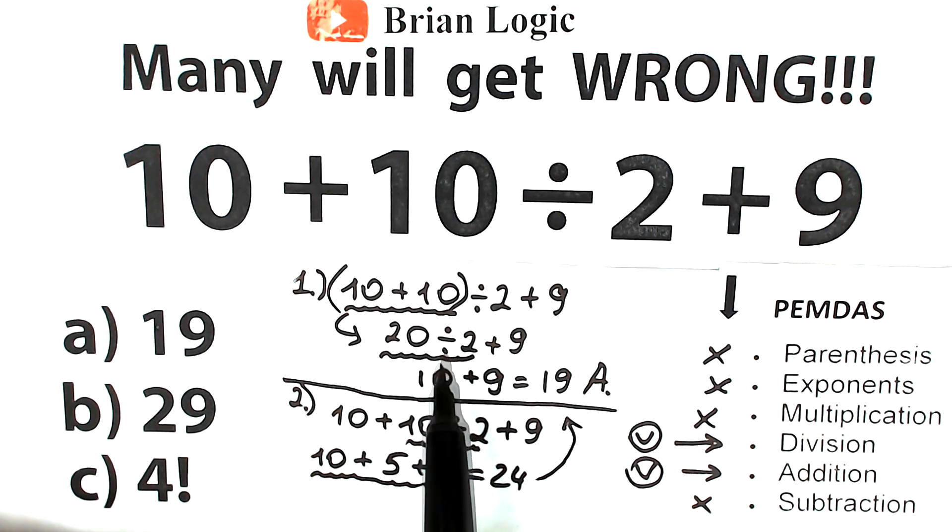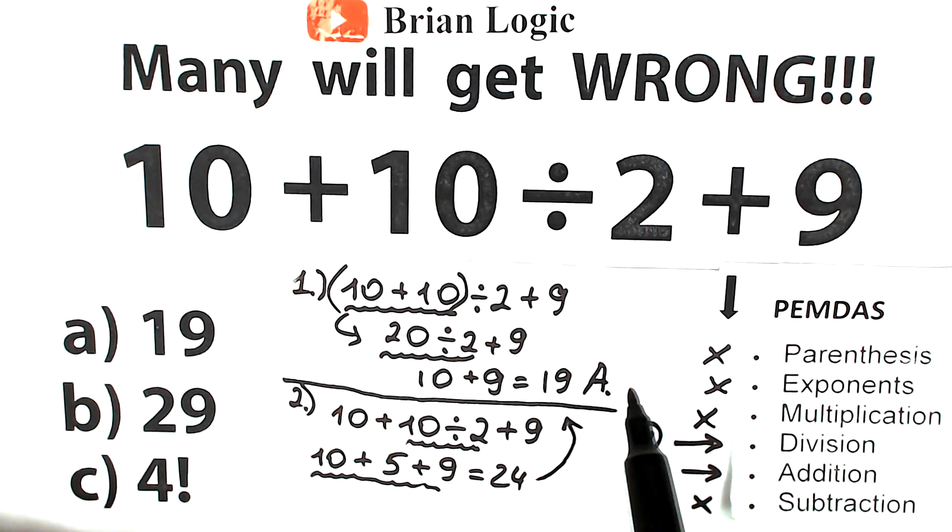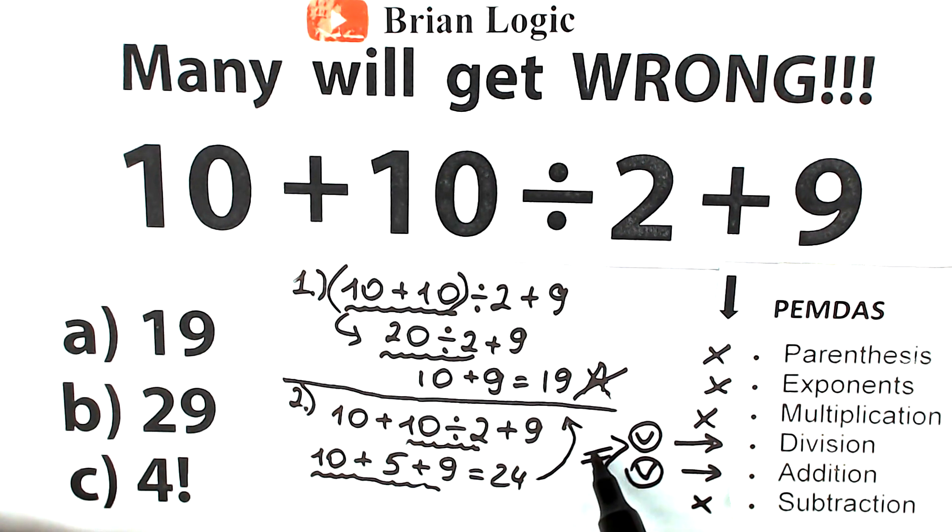With parentheses, this would be a correct solution: (10 + 10) ÷ 2 + 9 = 20 ÷ 2 + 9 = 10 + 9 = 19. With parentheses, the correct answer would be 19. But in our case, we don't have parentheses. So the correct answer is 24, because we solve it according to the correct order of operations.